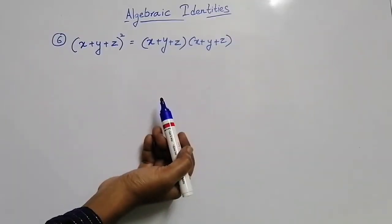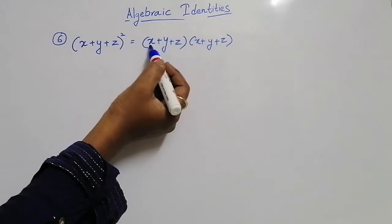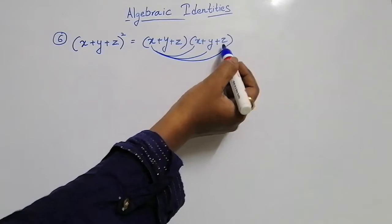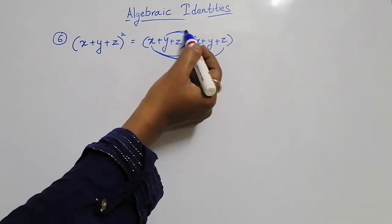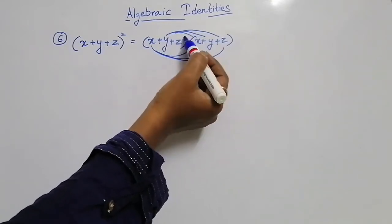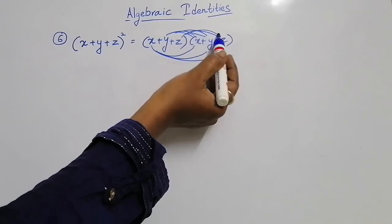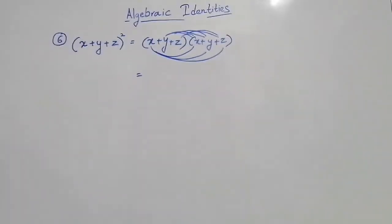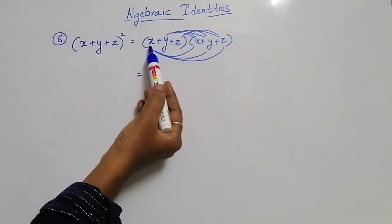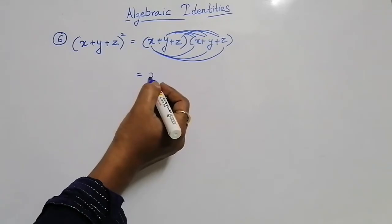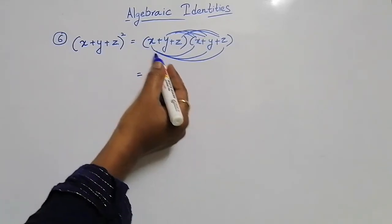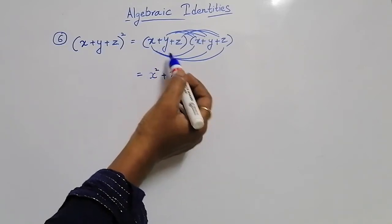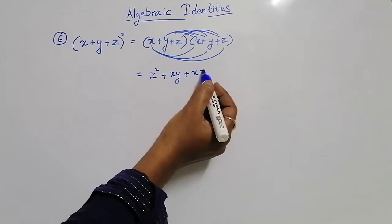Now what we have to do? Multiply this x with all these terms, multiply y with all these terms, and multiply this z with all these terms. Let us do one by one, slowly. Don't be in a hurry, students. Just do slowly. x into x gives x square, plus x into y gives plus xy, plus x into z gives plus xz.